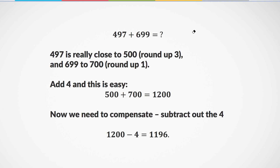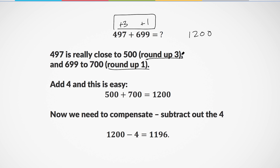Let's try one more: 497 plus 699. This is almost 500 and this is almost 700, so I add 500 plus 700 and get 1,200. But I upcounted by 3 on the first number and by 1 on the second. To undo this, I subtract off the 4 that I added in — I rounded up by 3 here and by 1 here, so that's 4 total. 1,200 minus 4 is 1,196. So we can do this with addition too: round up to make the problem easier, calculate how much you rounded up by, then take it out at the end.